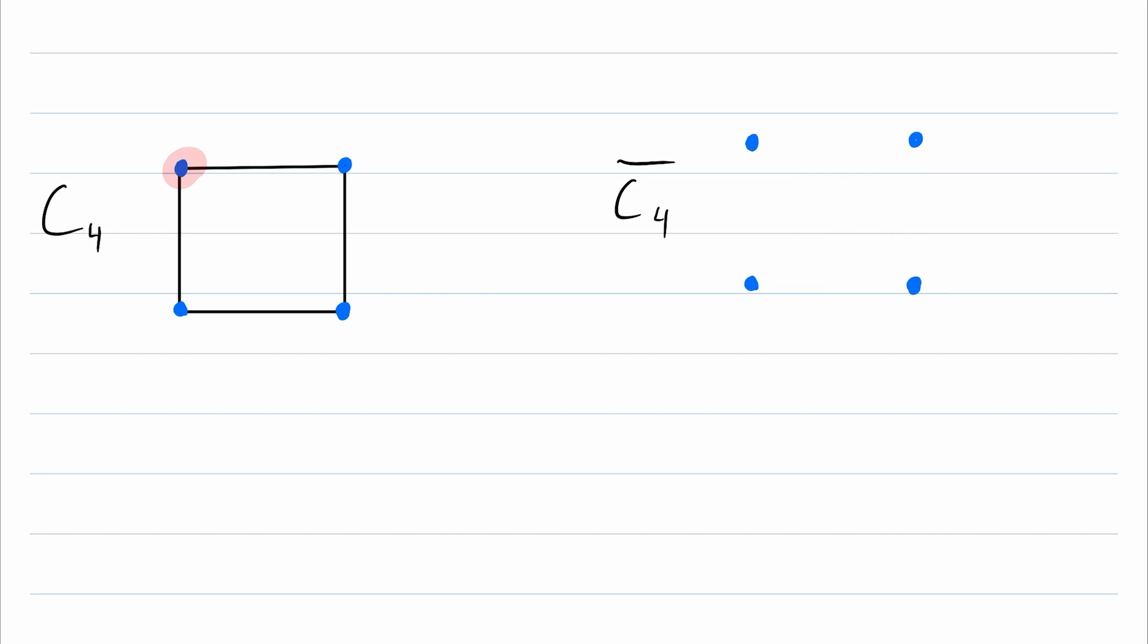And then if two vertices are not adjacent in a graph, they will be adjacent in the complement. These two vertices as well are not adjacent in the original, so they are adjacent in the complement. So that's a quick look at what the complement of a graph is.